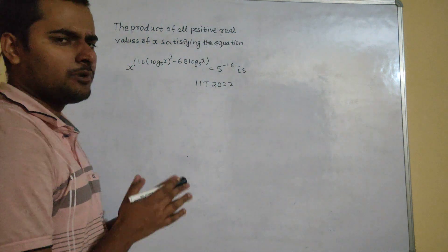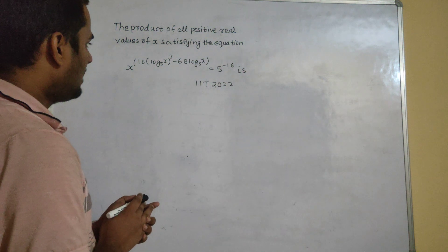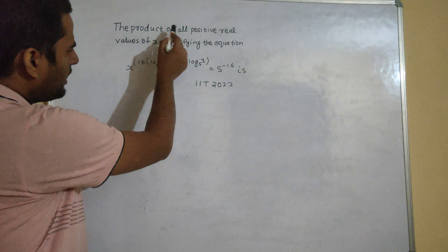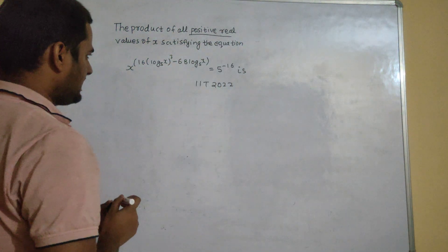It's a question from logarithm involving a logarithmic equation. So let's see how to solve. First of all, what the question says, the product of all positive real values of x satisfying that equation.